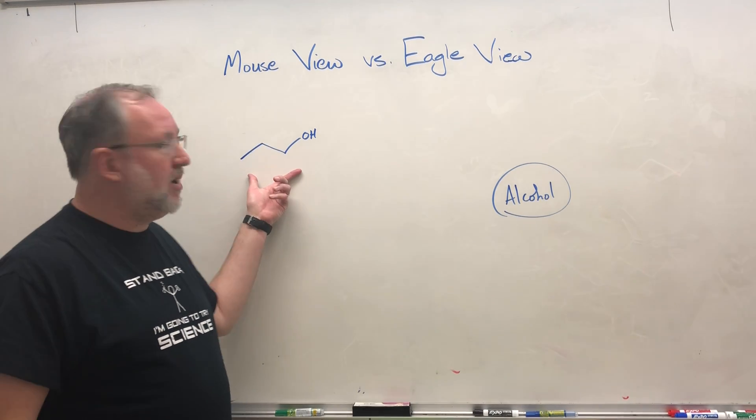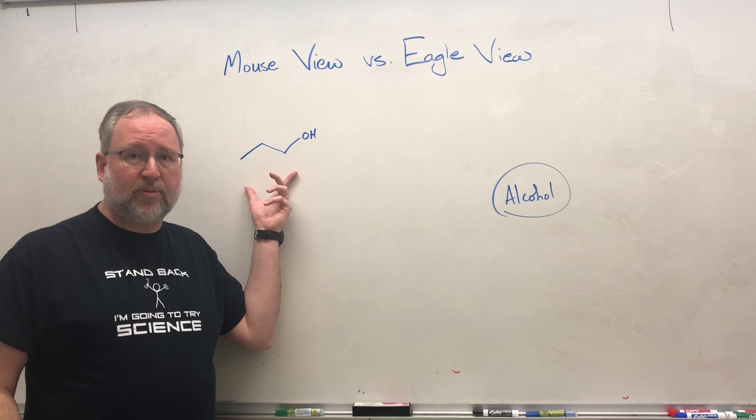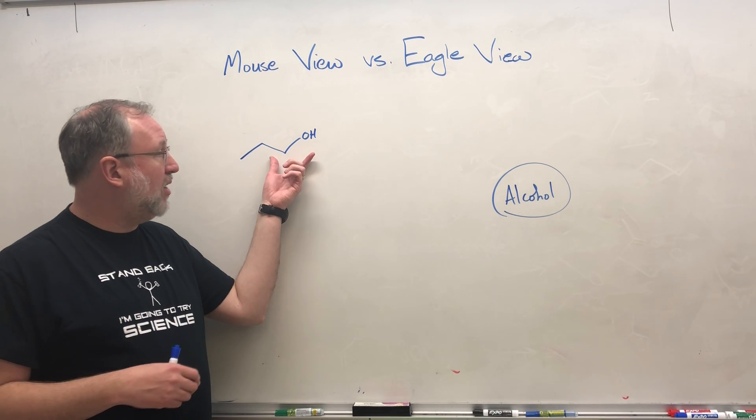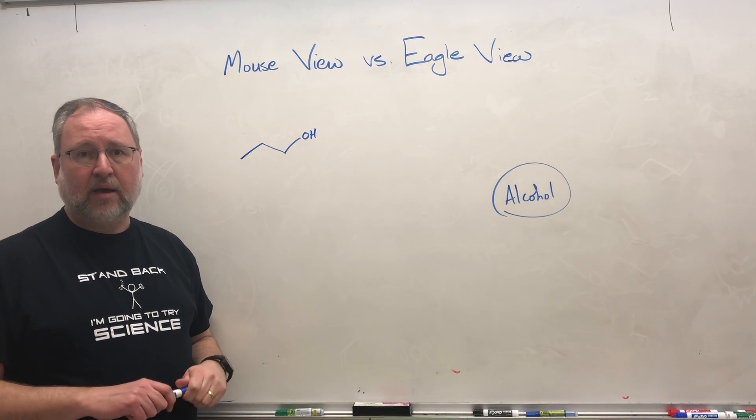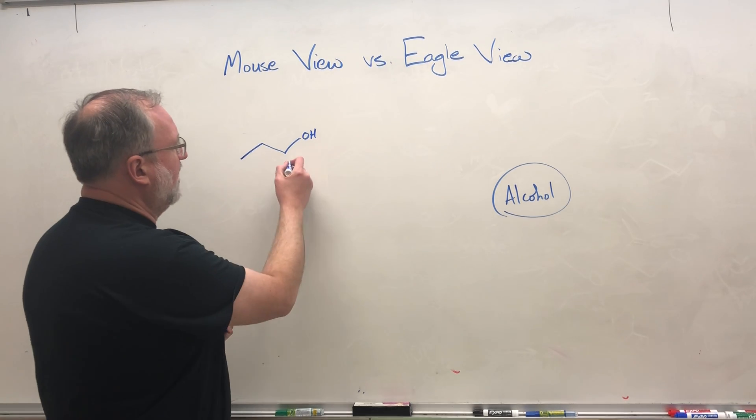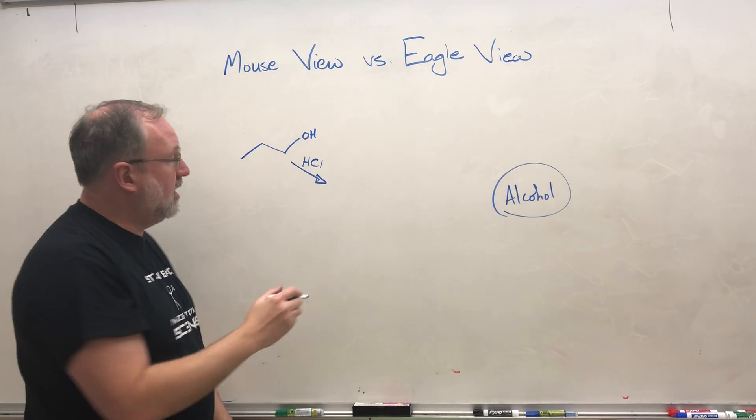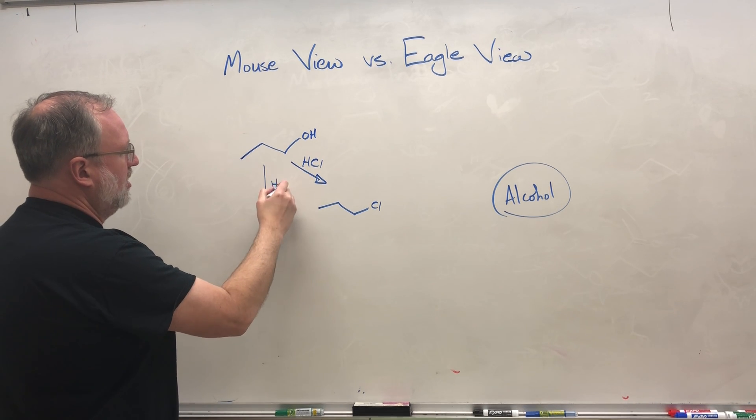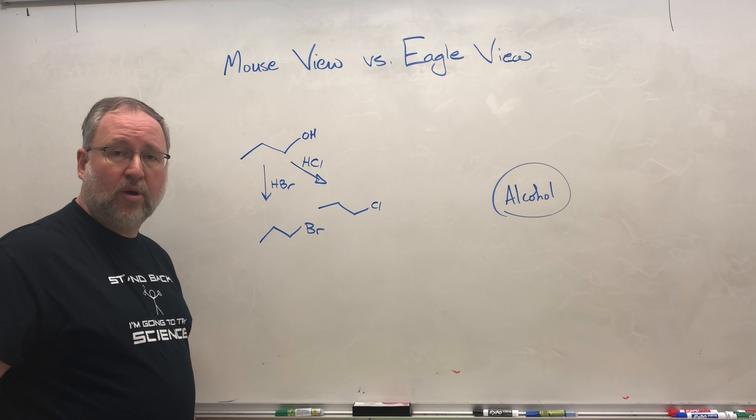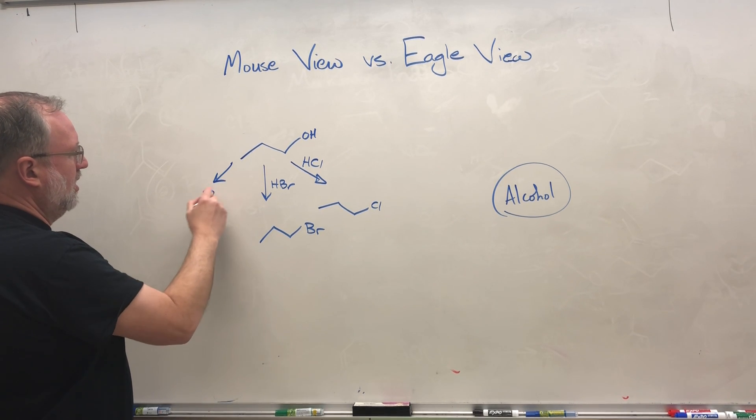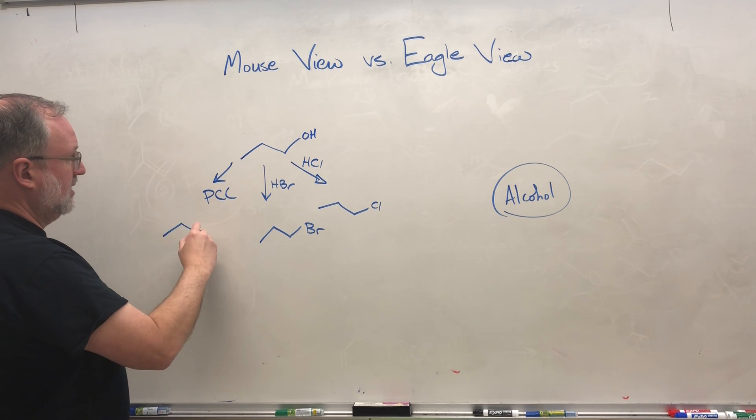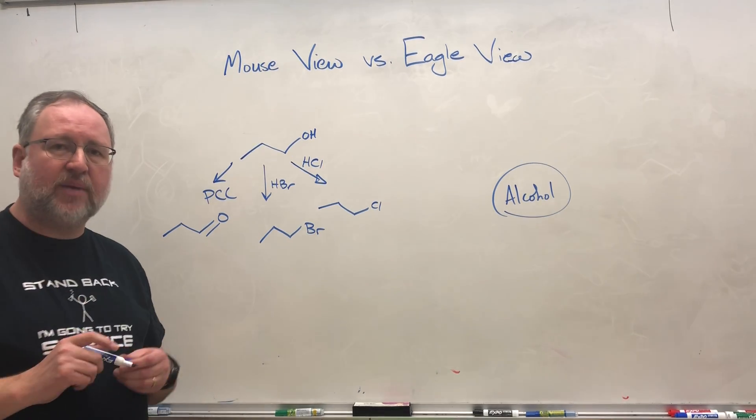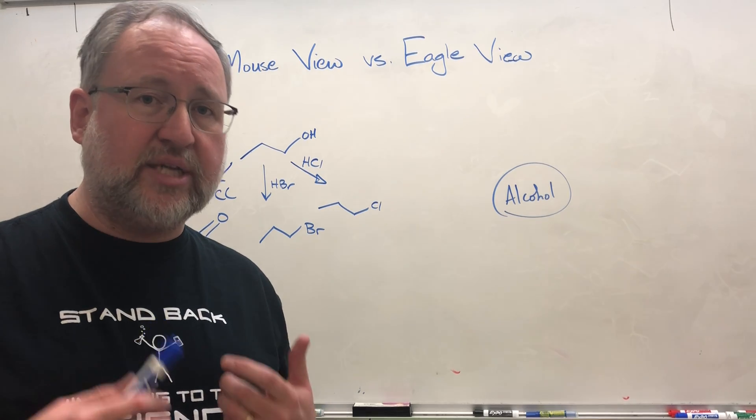As an example, if we think about propanol and the mouse view of propanol, the mouse view is: I know that this is the three carbon alcohol, it's a primary alcohol, and I know what I can do with this. If I add hydrochloric acid HCl, I can convert this into 1-chloropropane. If I add instead HBr, I can convert that into 1-bromopropane. If I add PCC, I can convert this into propanal, the aldehyde. So I have this really close up and detailed view of all the things I can do with this specific alcohol.